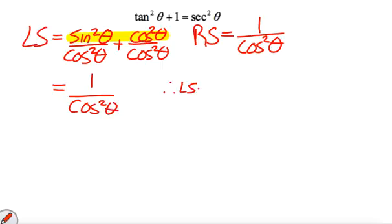Therefore, left side equals right side, therefore, tan squared plus 1 equals secant squared. Okay, there's your first one.